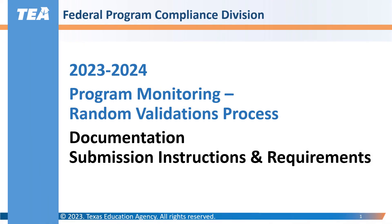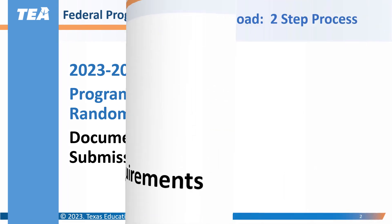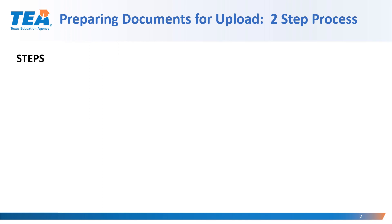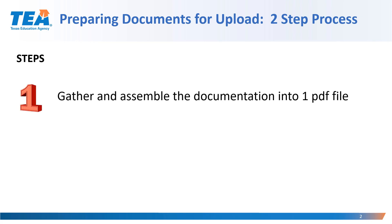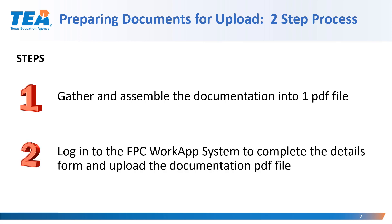In this section of the training, you will learn about the documentation submission instructions and requirements for the program monitoring random validations process administered by the Federal Program Compliance Division at the Texas Education Agency. Preparing documents for upload is a two-step process. Step 1 includes gathering and assembling the documentation into one PDF formatted file. Step 2 includes logging into the FPC WorkApp system to complete the details form and upload the documentation PDF file.